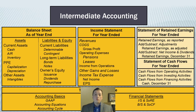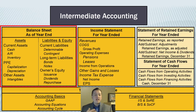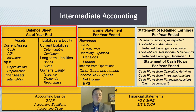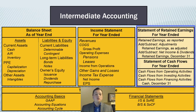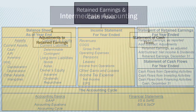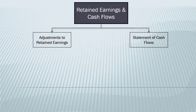Through our intermediate part one course we talked about the balance sheet and all the different pieces of it — how we stay in balance by accounting for the asset and the way we finance that asset. In the first part of intermediate part two we focused on the income statement. Now in our third module we're going to transition to the last of our financial statements: the statement of retained earnings and the statement of cash flows.